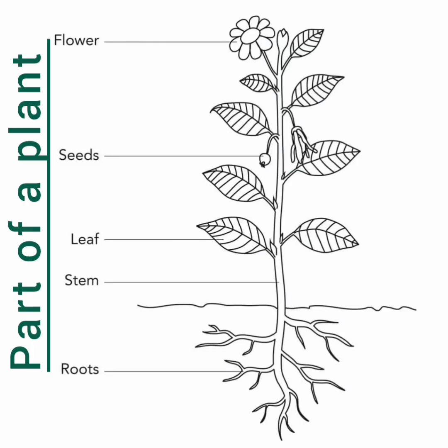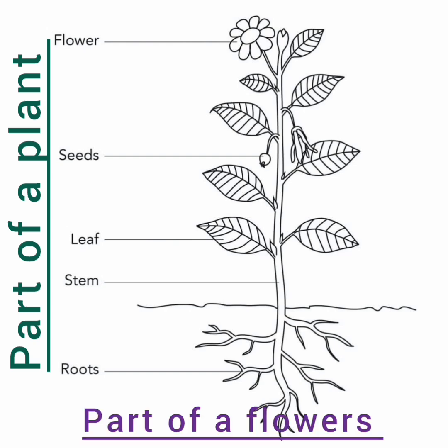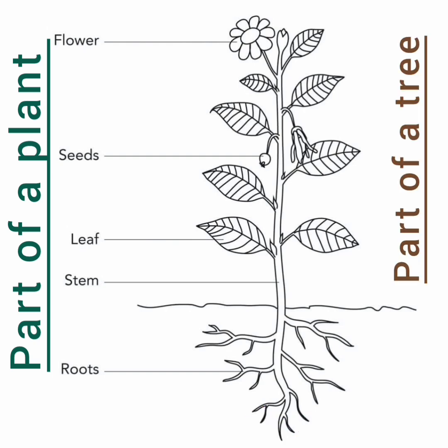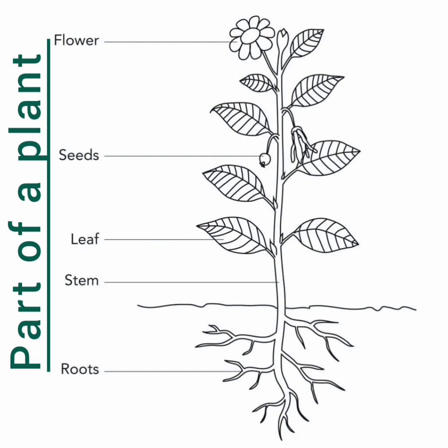Parts of a plant can either be part of a flower, part of a tree, or part of a grass.